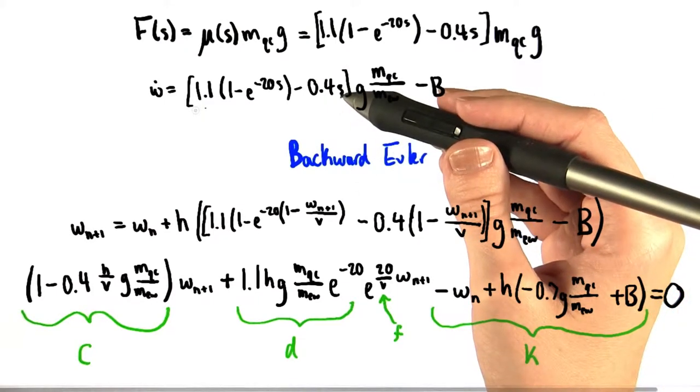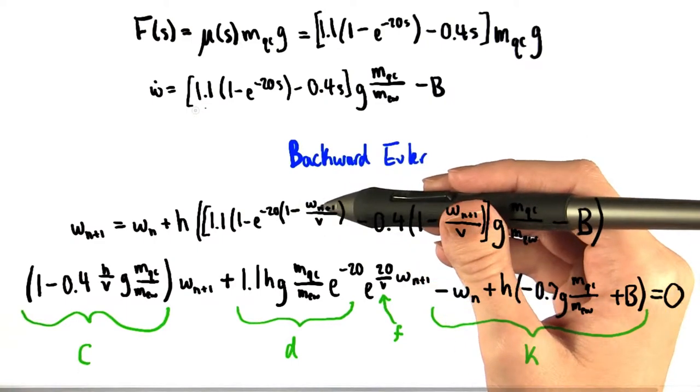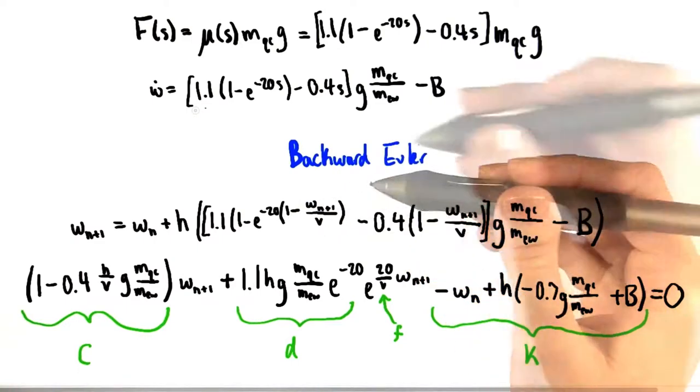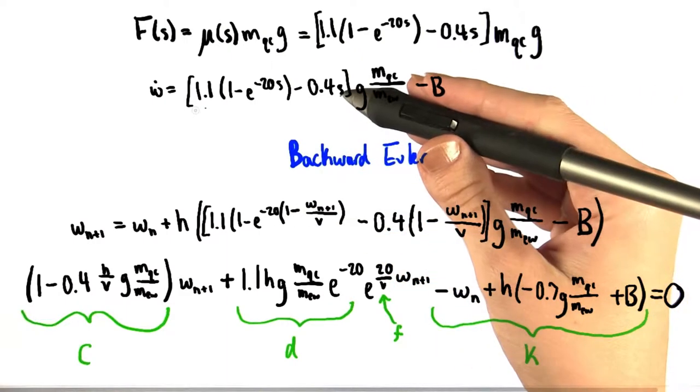We've rewritten s, the wheel slip, which you see here and here, as 1 minus w at the n+1 step over v, which of course is just an equivalent expression. This gets rid of any explicit dependence on s.